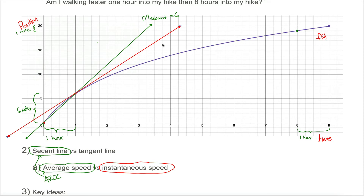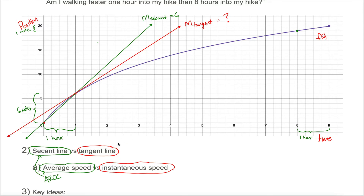Tangent lines are pretty complicated ideas in math, which is why you wait until calculus to learn about them. For now, what I want you to understand is that to measure instantaneous speed, I need to calculate the slope of the tangent line — the line pictured in red. I already know how to calculate the slope of a secant line; that's just the average rate of change. Calculating the slope of a tangent line, it turns out, is not easy.